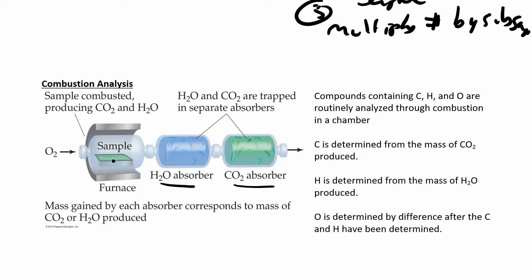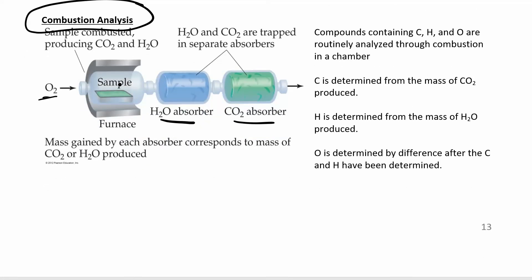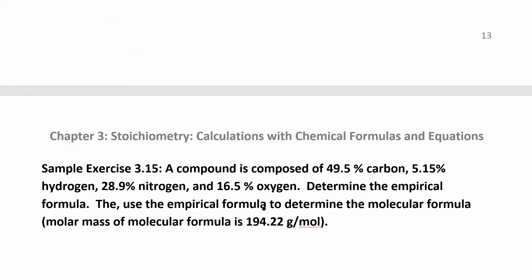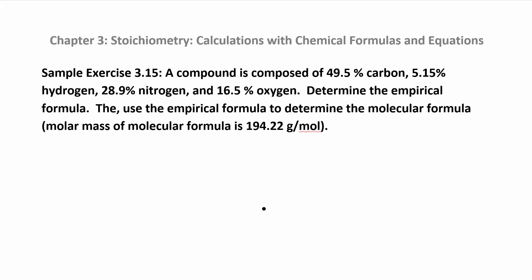All the hydrogen from your sample ends up in the water, and all the carbon ends up in the carbon dioxide. Oxygen you have to figure out based on how much mass you started with, since you are adding oxygen as one of your reactants. This is combustion analysis — you can read more about it in the book — showing how you get all those mass percents from an unknown sample.